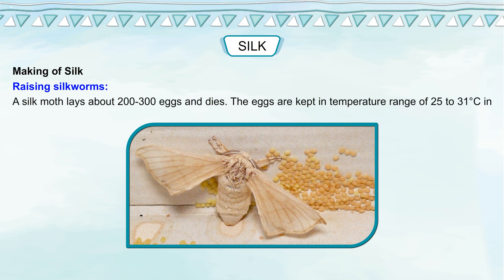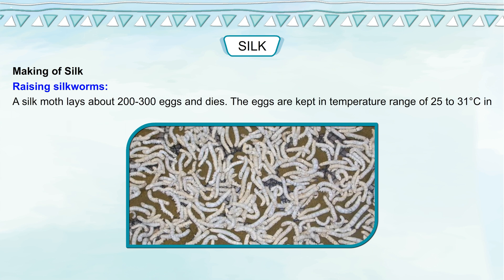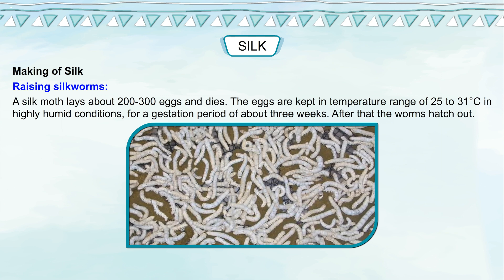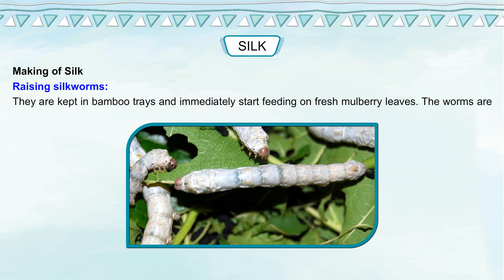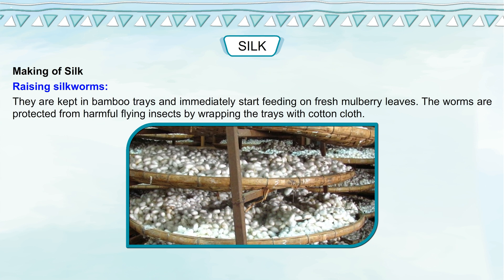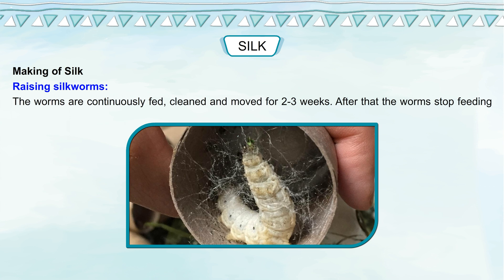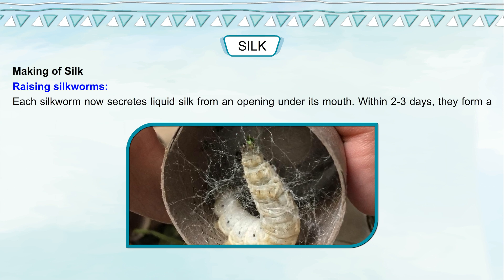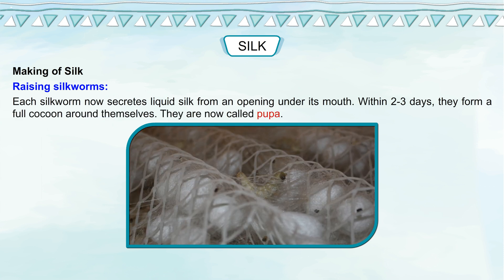A silk moth lays about 200 to 300 eggs and then dies. The eggs are kept at a temperature of 25 to 31 degrees Celsius in highly humid conditions for a gestation period of about three weeks, after which the worms hatch out. They are kept in bamboo trays and immediately start feeding on fresh mulberry leaves. The worms are protected from harmful flying insects by wrapping the trays with cotton cloth. After being continuously fed, cleaned and moved for two to three weeks, the worms stop feeding and are ready to make silk. Each silkworm secretes liquid silk from an opening under its mouth, and within two to three days they form a full cocoon around themselves. They are now called pupa.